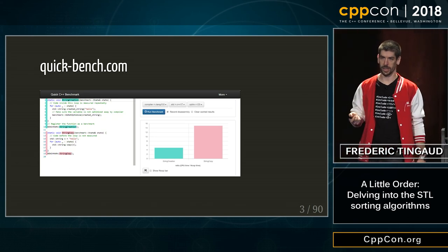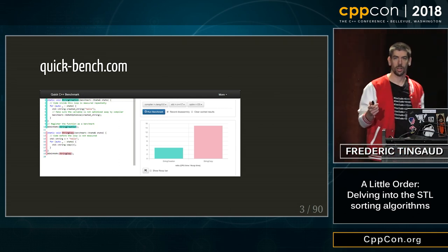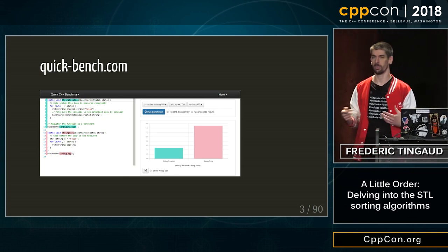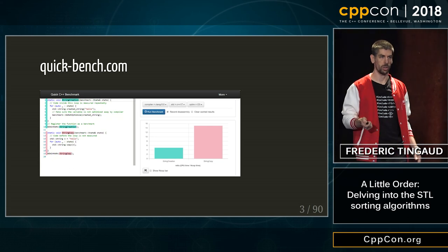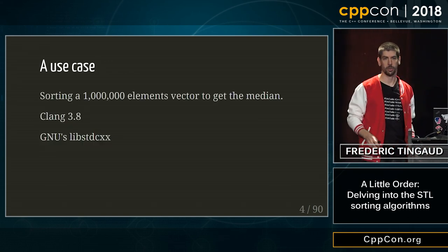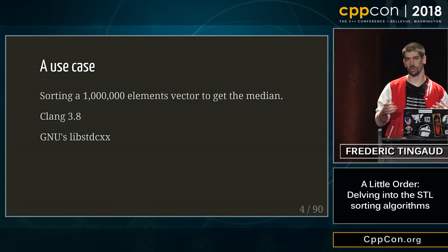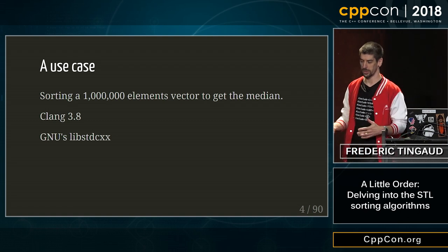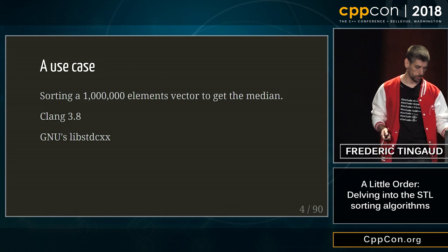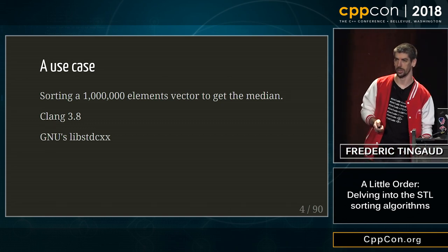Last year I went to CppCon, and I wanted to do a five-minute presentation on quickbench. I thought, which kind of use case would I show that would, in five minutes, present the interest of the tool? My use case was: I have a vector of one million elements, and I try to find the median using different sorting algorithms from the STL. At the time, quickbench only had Clang 3.8 and no implementation of the libstdc++.